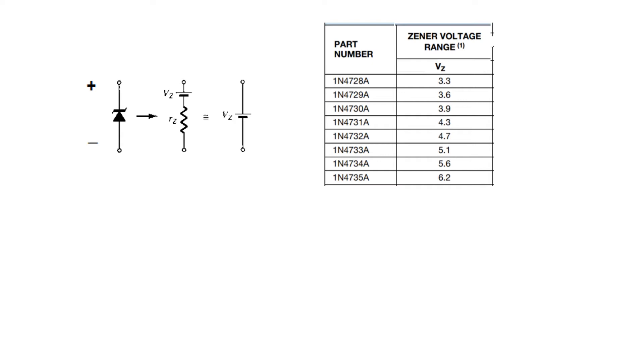So when we draw the equivalent circuit for the Zener diode we generally replace it by a voltage source and a resistance. This resistance is negligible therefore we just represent it by a voltage source and this voltage source is the breakdown voltage of the Zener. So if you are using this one, here we will write 3.3 volt.